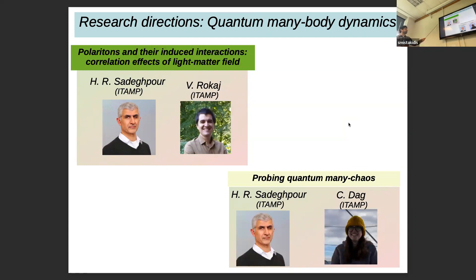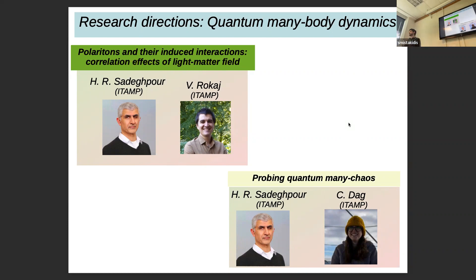I would also like to mention two collaborations here, which I am honored to have with Vassilis and Tsarend here at this institution. With Vassilis, we study polaronic physics, constructing effective Hamiltonians to understand interactions of these quasiparticles and correlation effects stemming from the light-matter field. With Tsarend, we are trying to evince signatures of many-body chaos in quantum many-body systems and understand the properties of these systems for multi-component spinor Bose-Einstein condensates.